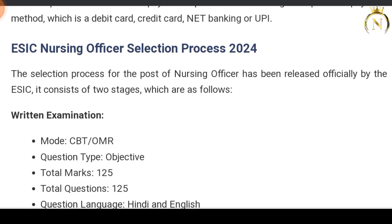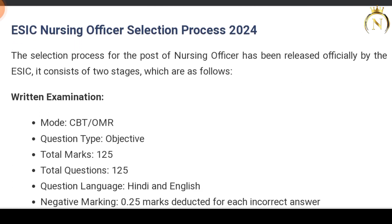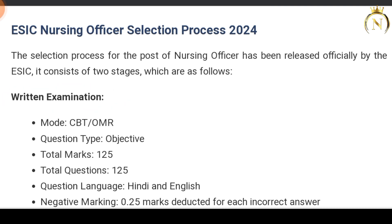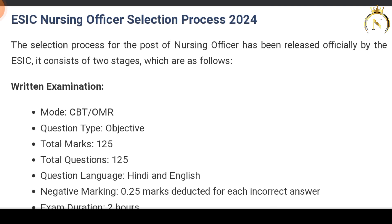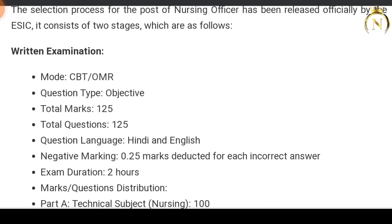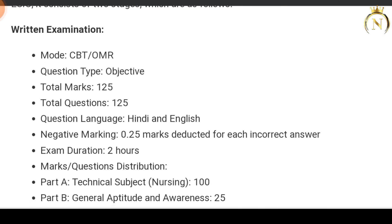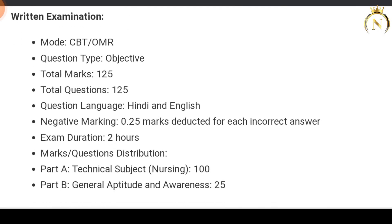The ESIC Nursing Officer selection process has two stages. First is the written examination, and second is document verification. You must first pass the written examination before proceeding to document verification. The written examination mode is CBT (Computer-Based Test), with objective-type questions only.